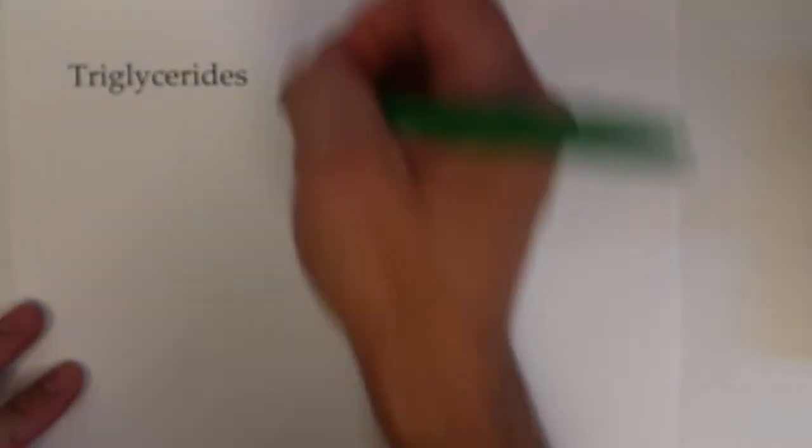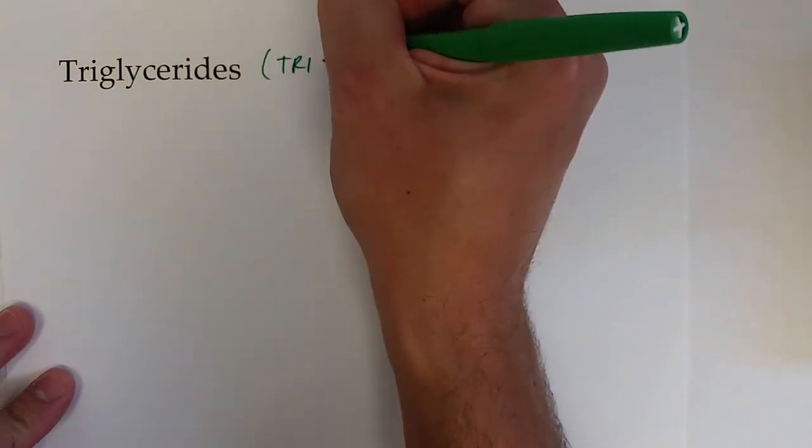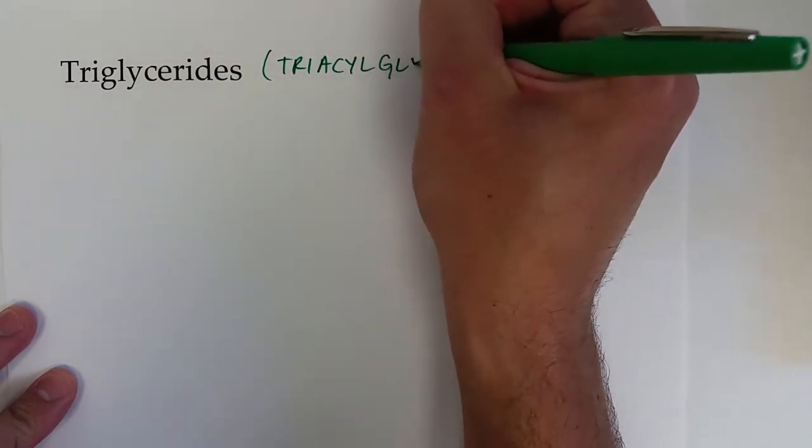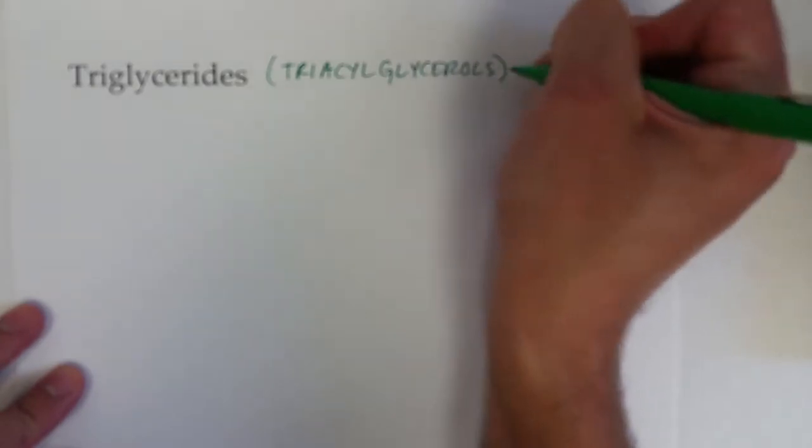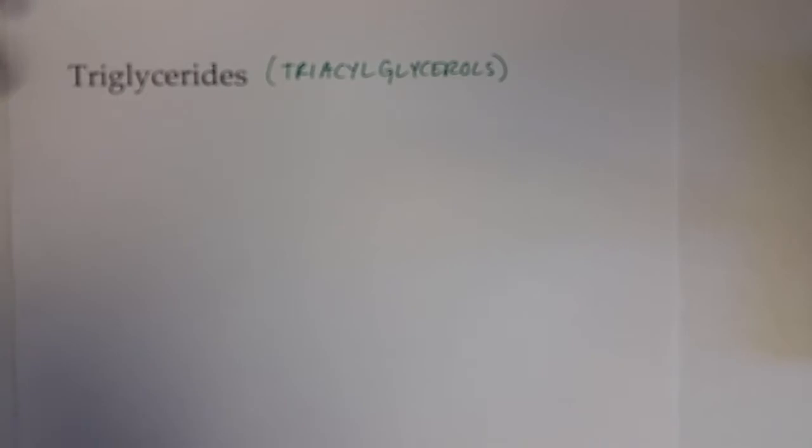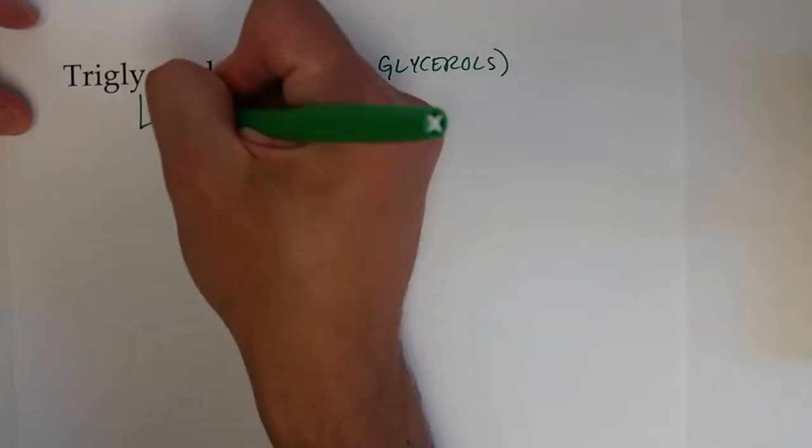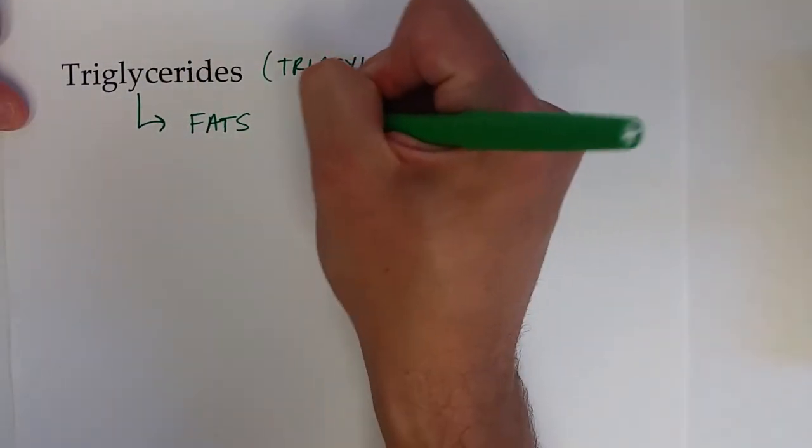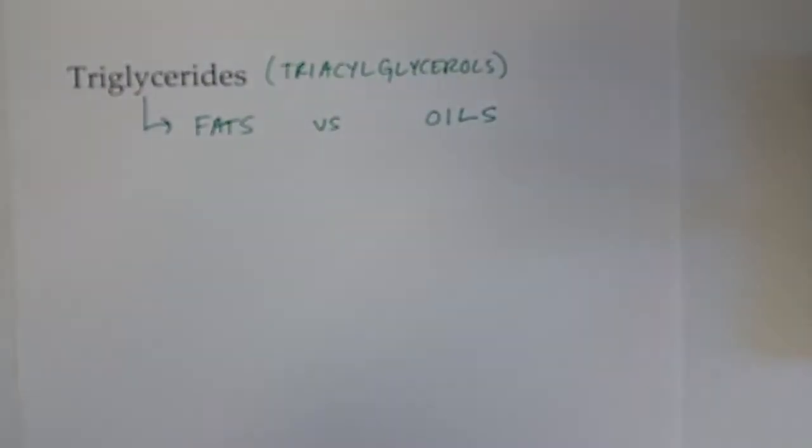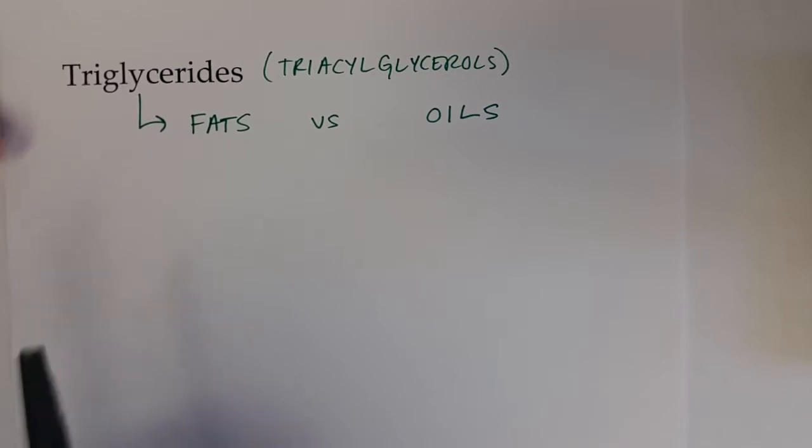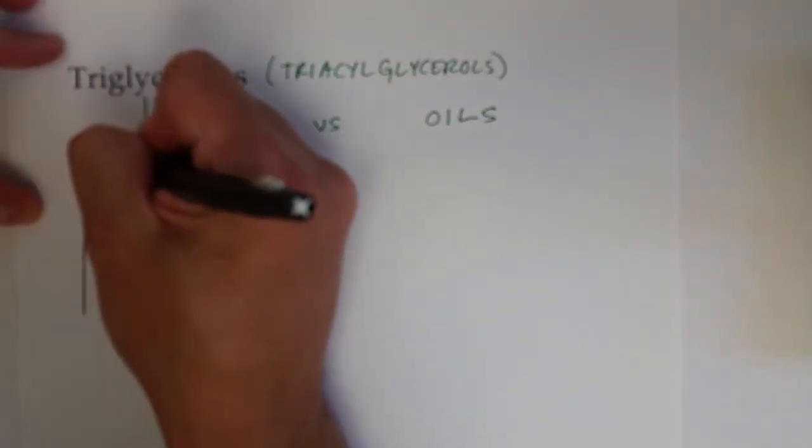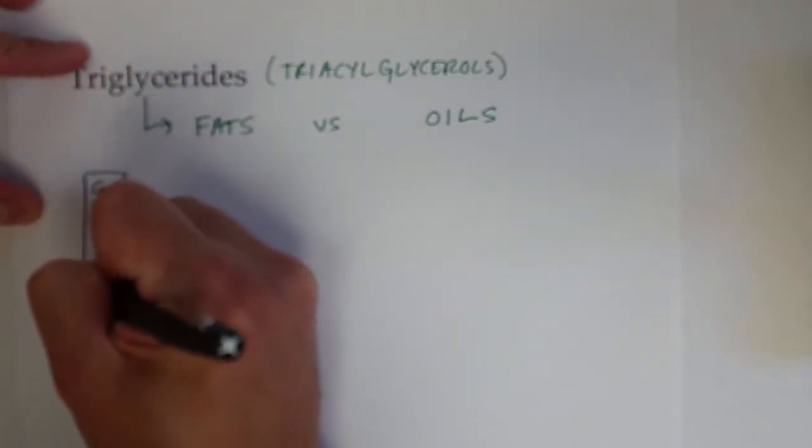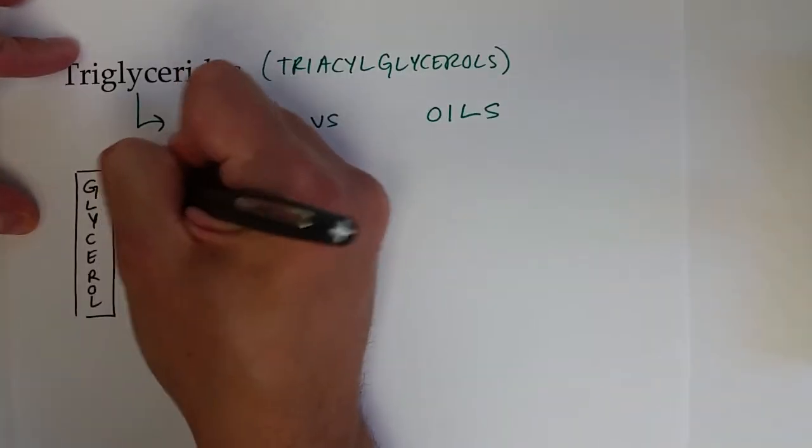Triglycerides, or also triacylglycerols, are another important type of lipid. They can basically be broken up into two big categories: fats and oils. Both fats and oils essentially start with a glycerol molecule that is linked up to three fatty acids.